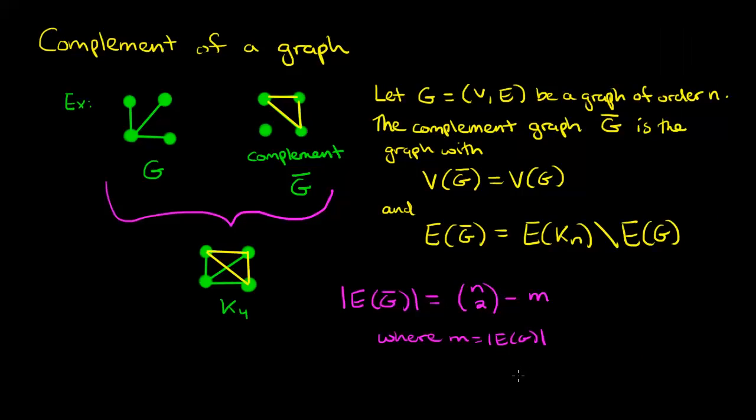So now let's continue. If we take a look at our example, we had m equal to 3 and 4 choose 2 is 6. So that's why our complement graph has the other three remaining edges.